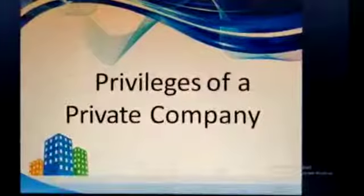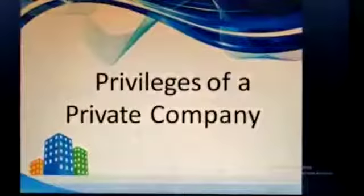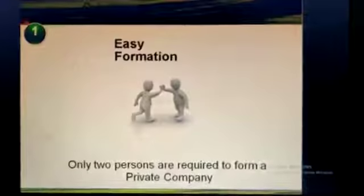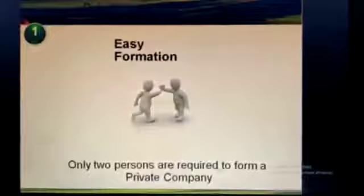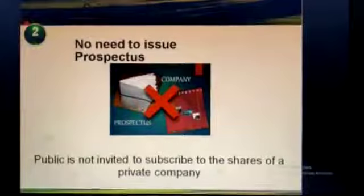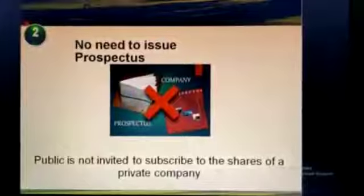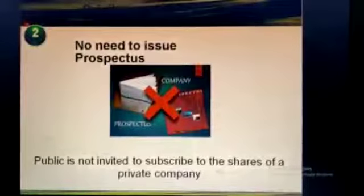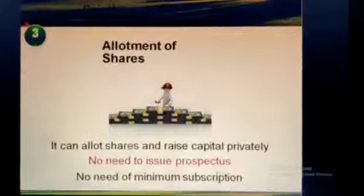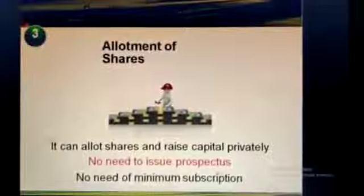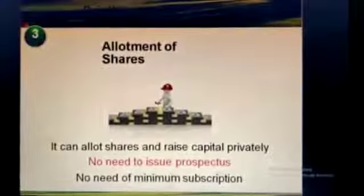As compared to a public company, a private company is given some exemptions or privileges. First is easy formation — a private company can be started with just 2 members, whereas a public company requires at least 7 members. Second, there is no need to issue a prospectus, as the public is not invited to subscribe to the shares of a private company. Third, regarding allotment of shares, it can allot shares and raise capital privately, with no need to issue a prospectus.